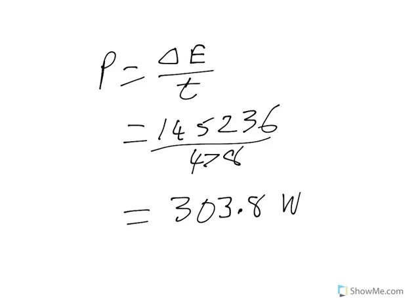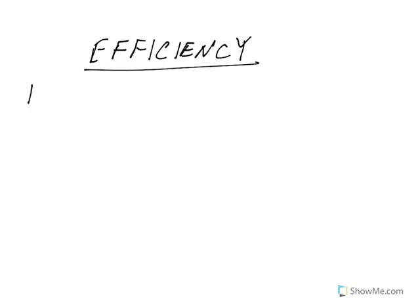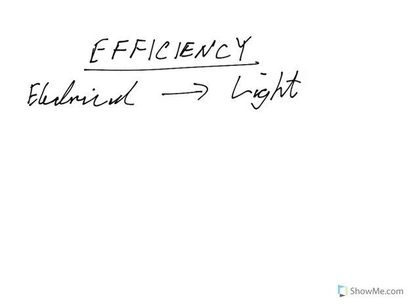Now, in the real world, of course, we do work on stuff, but we don't always necessarily get energy transformed to what we want, and so that then brings up something called efficiency. Alright, so, for example, if we've got some electrical energy, and it goes into a light, well, we want light energy out, which we do get, but we also get some heat. So when we talk about efficiency, we're not talking about all the energy change, but the one that we want, so we want light.